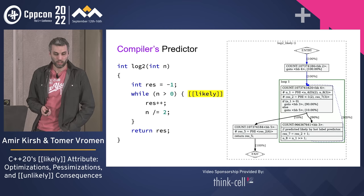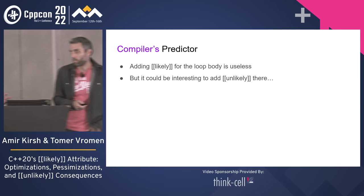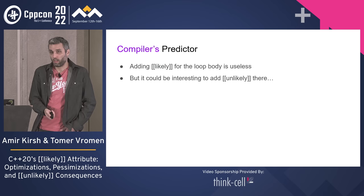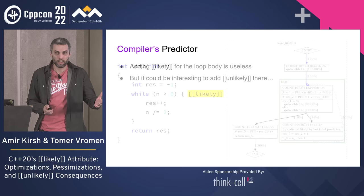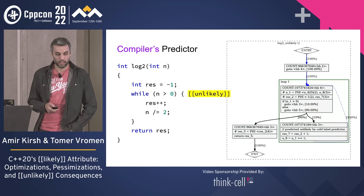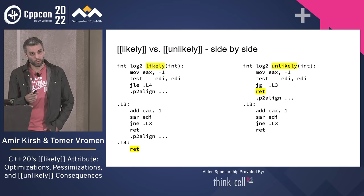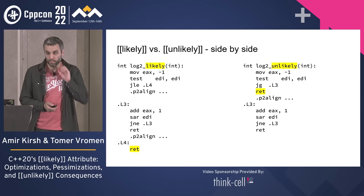Adding [[likely]] is mostly useless in this case. But let's try [[unlikely]] — saying we want to exit the loop fast, or not even enter it. Switching to [[unlikely]] reverses the percentages: now 90% for exiting and 10% for staying. Comparing the two versions in assembly, we do see a difference: the [[unlikely]] version takes the return statement and puts it very near the start of the function, so if we don't take the branch it's easy to return quickly — the instruction is already right there.